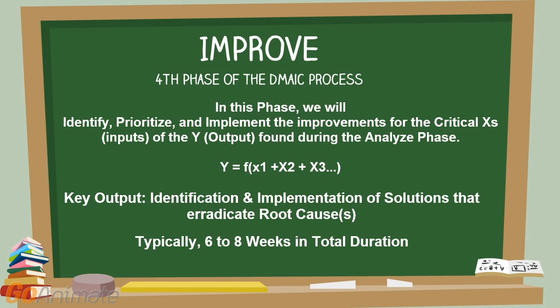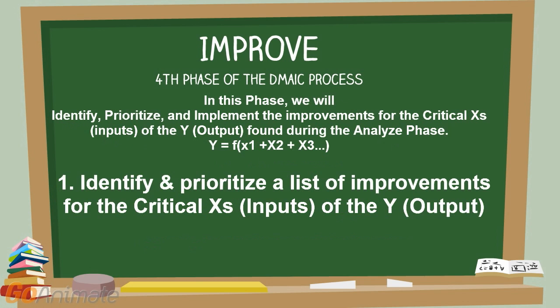Typically, the Improve phase is six to eight weeks in total duration, depending on how long it takes to obtain funding, order parts, and implement the pilot run.